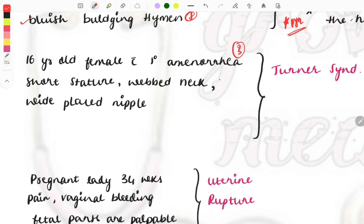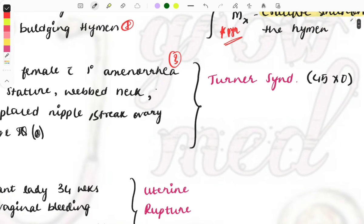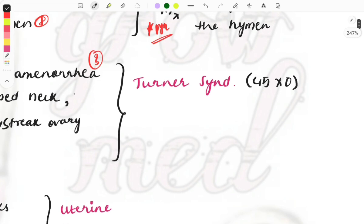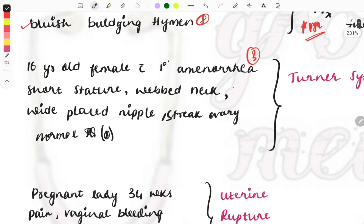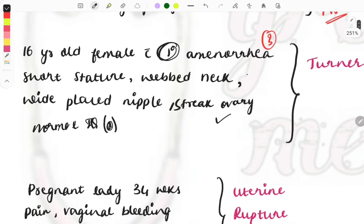If absent uterus, go with Mullerian agenesis. Bluish bulging hymen, go with imperforate hymen. If described features like short stature, webbed neck, wide-spaced nipples, streak ovaries, and normal IQ, then it's Turner syndrome. The chromosomal abnormality associated with Turner will be 45 XO, which is a monosomy.